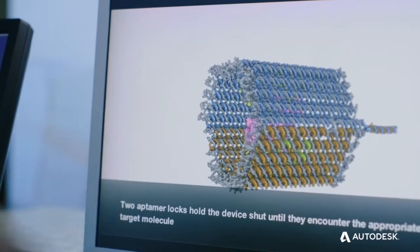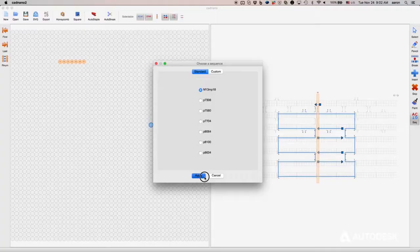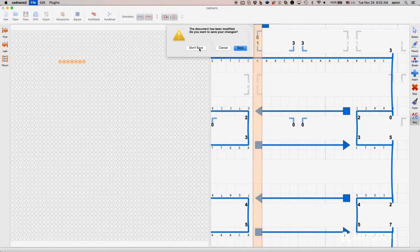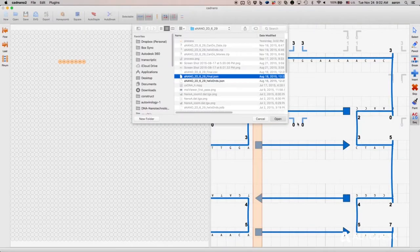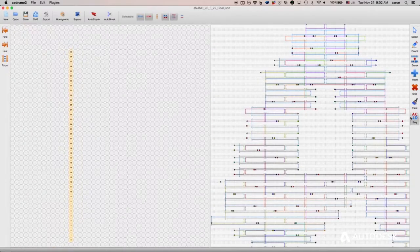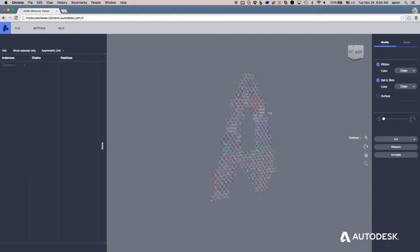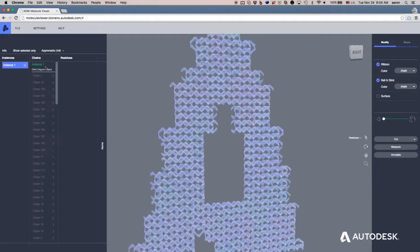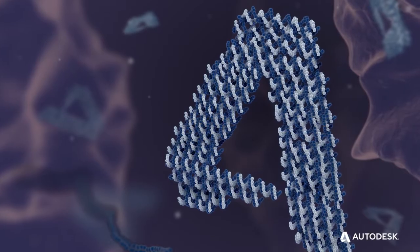We collaborated with the BC Institute to create Cat Nano 2, a CAD tool for DNA origami. Since then, we've been making more advances on DNA origami in general. We've actually created a project to fold the Autodesk A, our logo.